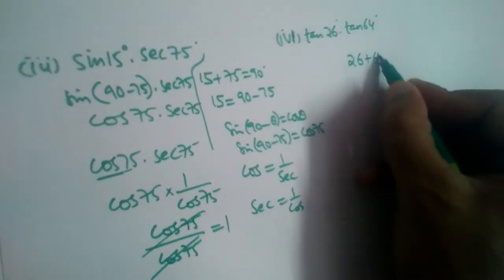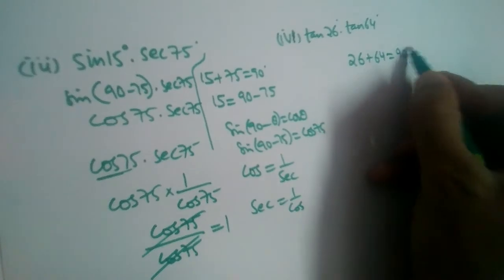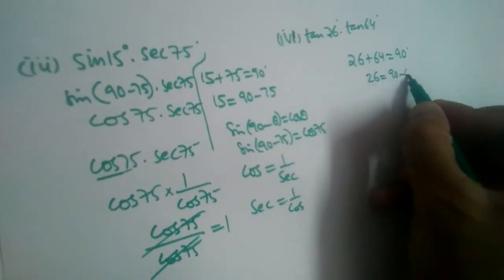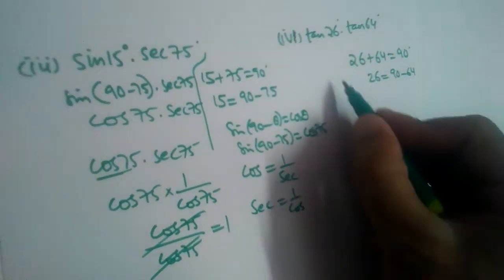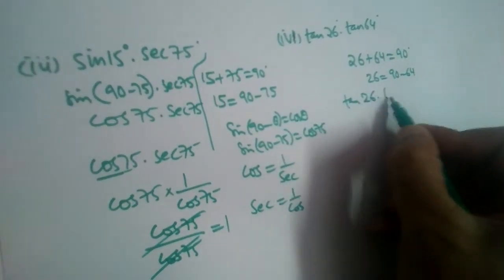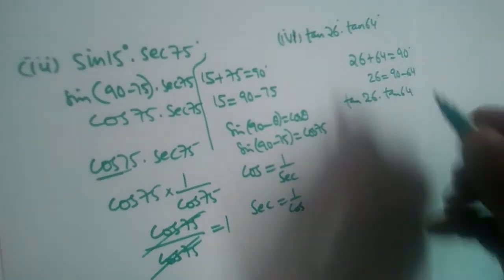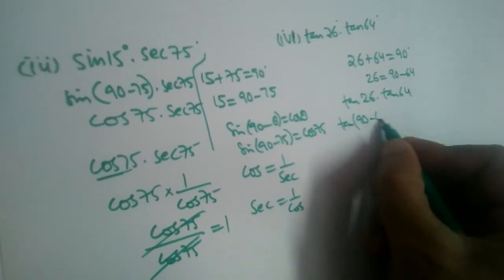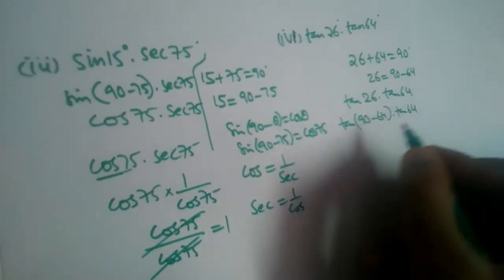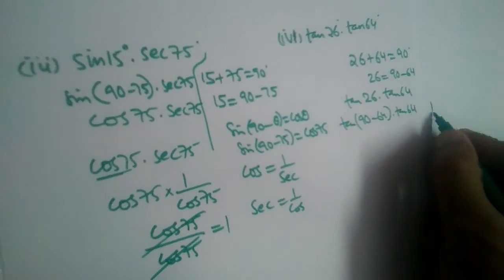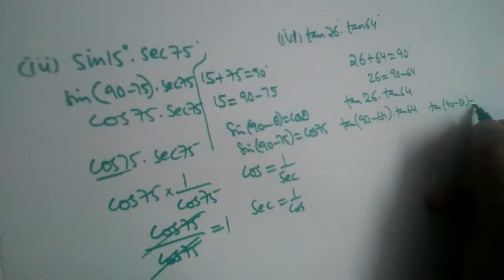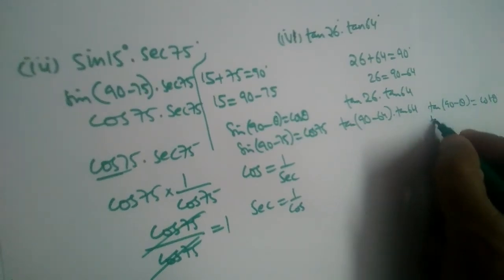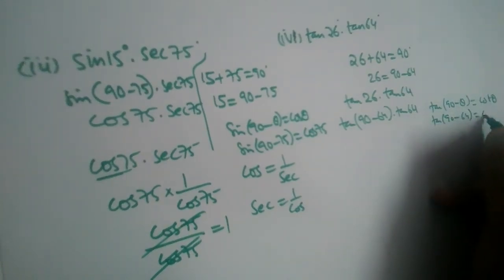The second problem is tan(26°) × tan(64°). Since 26 + 64 = 90°, we change 26 and write it as 90 - 64. So tan(26°) becomes tan(90° - 64°), multiplied by tan(64°).